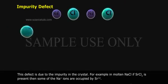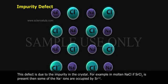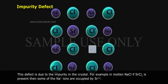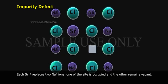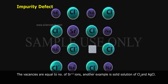A. Impurity defect. This defect is due to the presence of impurity in the crystal. For example, in molten NaCl, if SrCl2 is present, then some of the Na⁺ ions are occupied by Sr²⁺. Each Sr²⁺ replaces two Na⁺ ions. One of the sites is occupied and the other remains vacant. The vacancies are equal to the number of Sr²⁺ ions. Another example is a solid solution of Cl2 (chlorine) and AgCl (silver chloride).